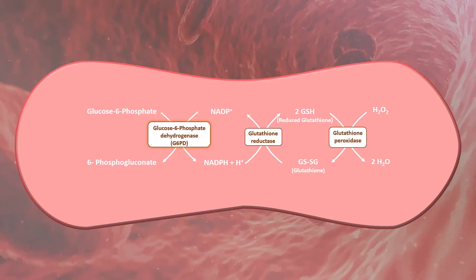Red blood cells are protected from increased oxidative stress through NADPH and reduced glutathione, both produced in the pentose phosphate pathway. In the first step of this pathway, the enzyme G6PD helps convert glucose-6-phosphate to 6-phosphogluconolactone. This reaction also results in reduction of NADP to NADPH.